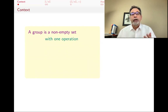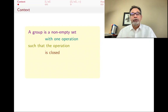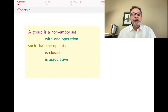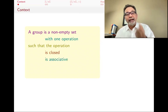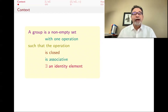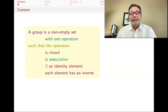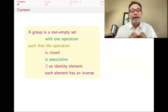A group is a non-empty set with one operation, and this operation has to have four properties. It has to be closed — if you take two elements and operate them, we usually say multiply them, you get another element in the set. The operation has to be associative: x times y times z should be x times y, z. We should have an identity element, some element that when you multiply it by other elements nothing happens, and each element needs to have an inverse — each element has a friend that if you multiply them together, you get that identity element.